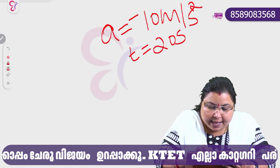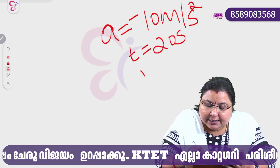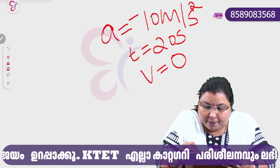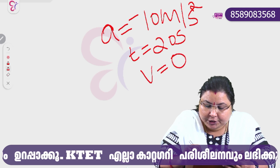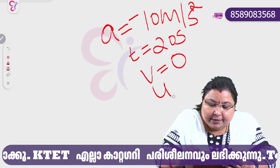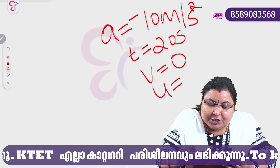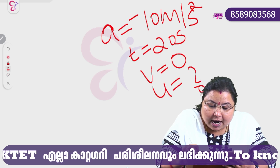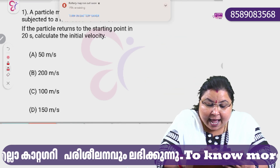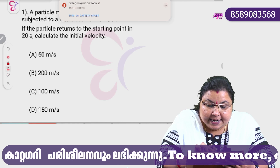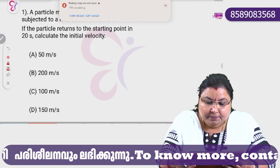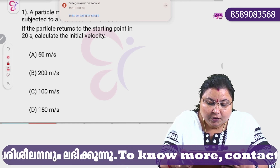In this case, the object is at the final position, so V is 0. We want to calculate the initial velocity.